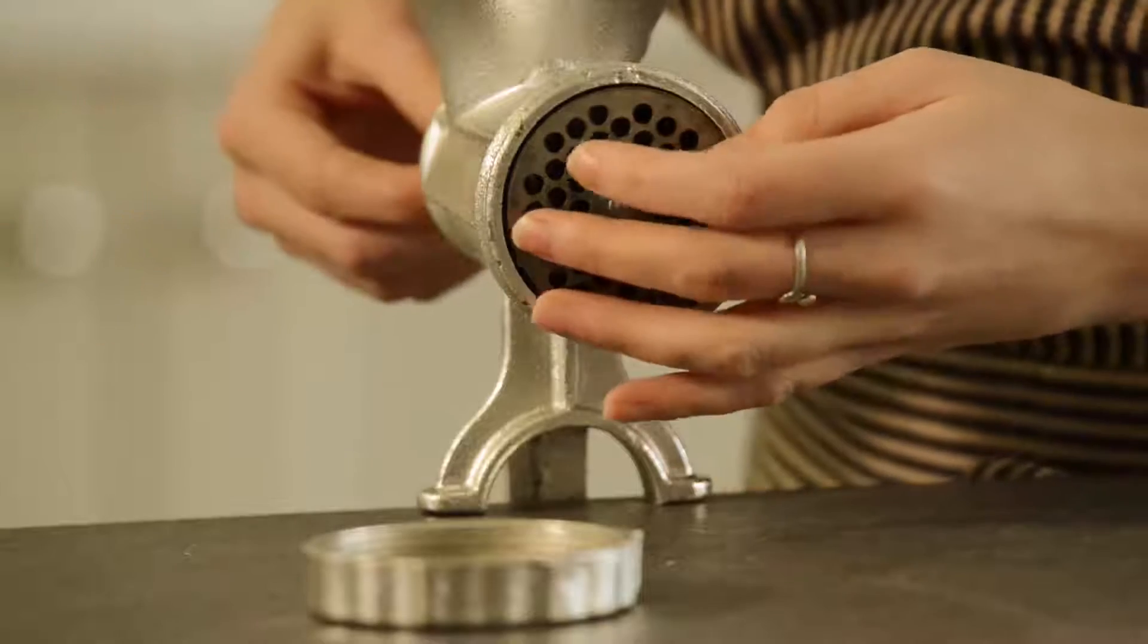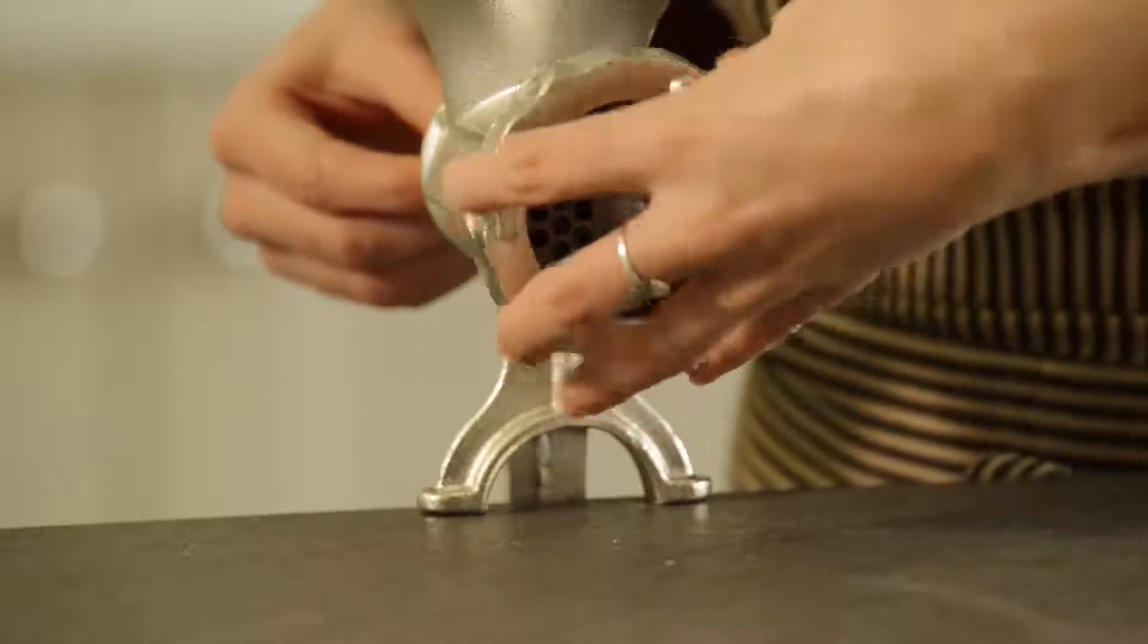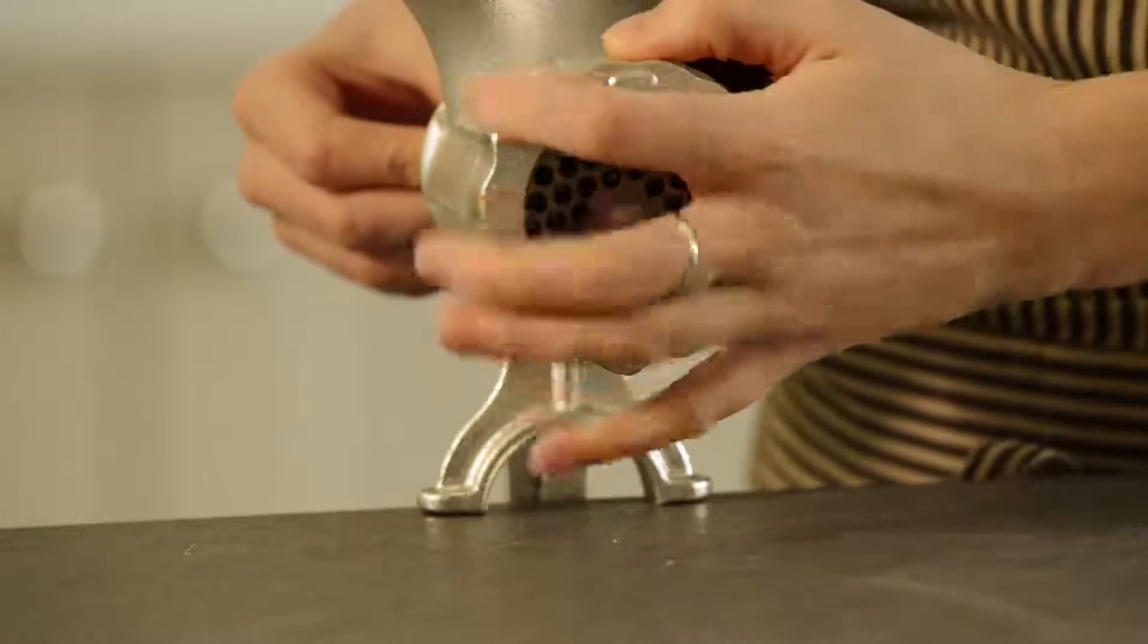Ensure that the indent under the grinding plate matches up with the spike underneath the blade. Lock in place with a locking ring in a clockwise direction.